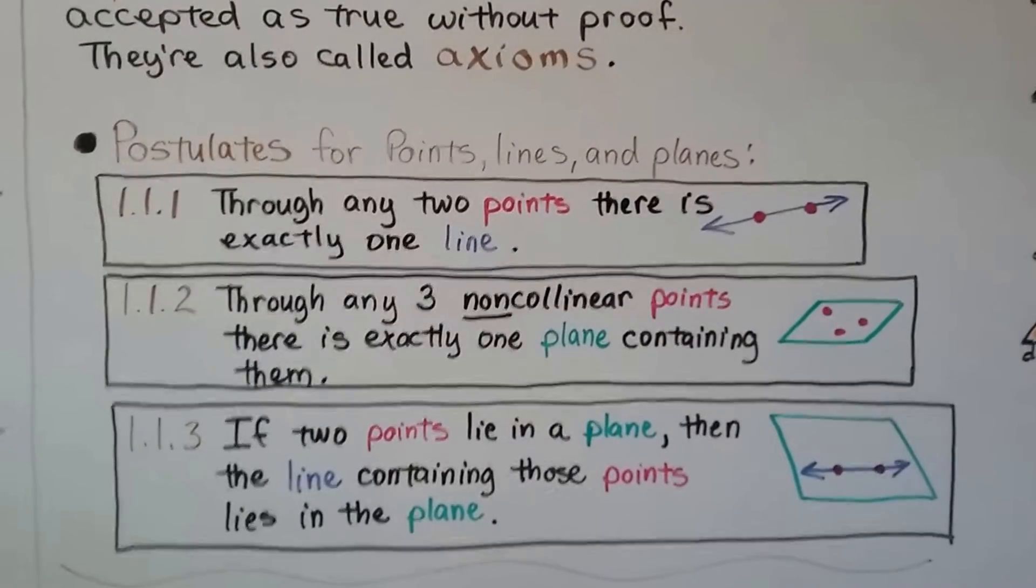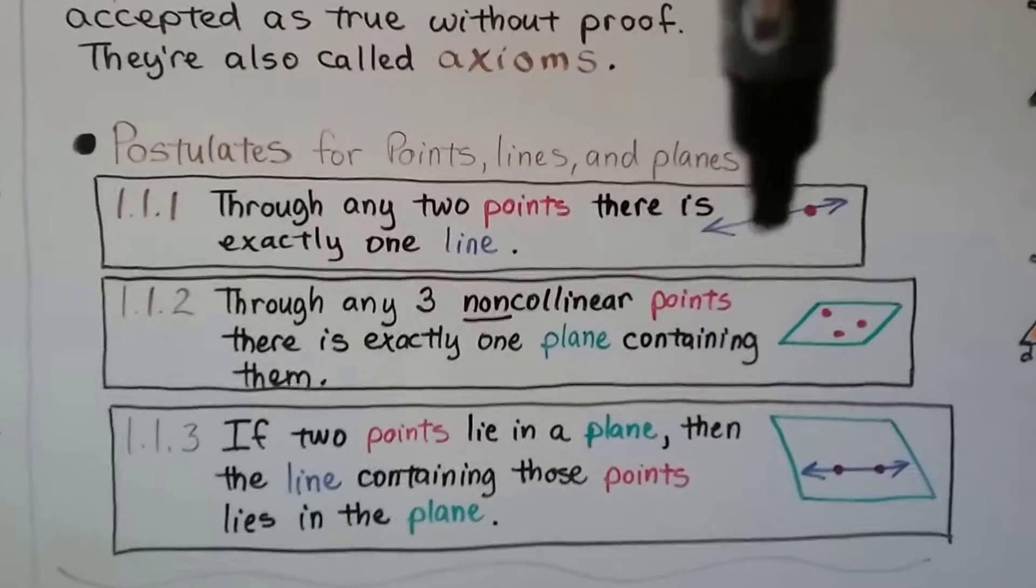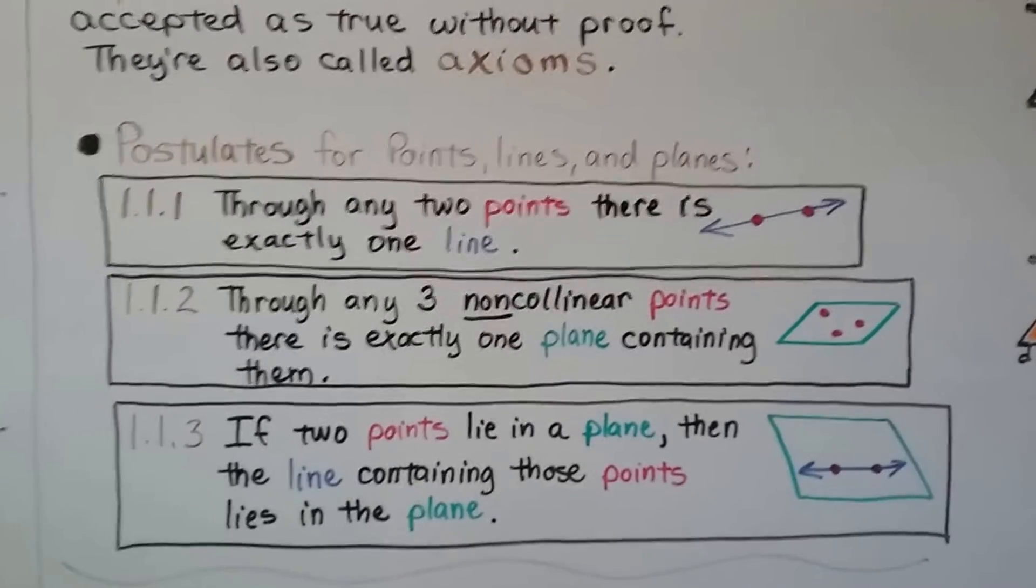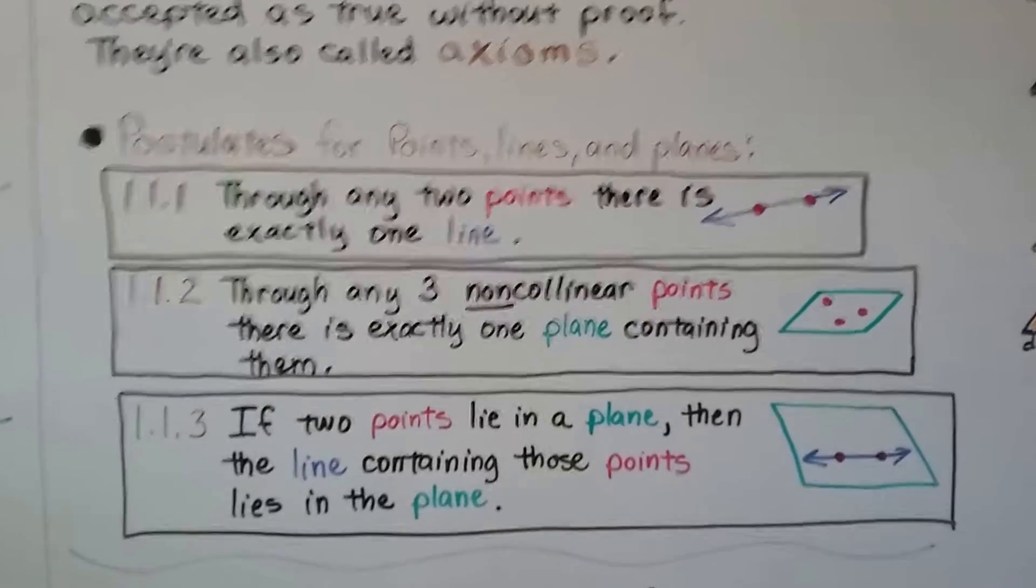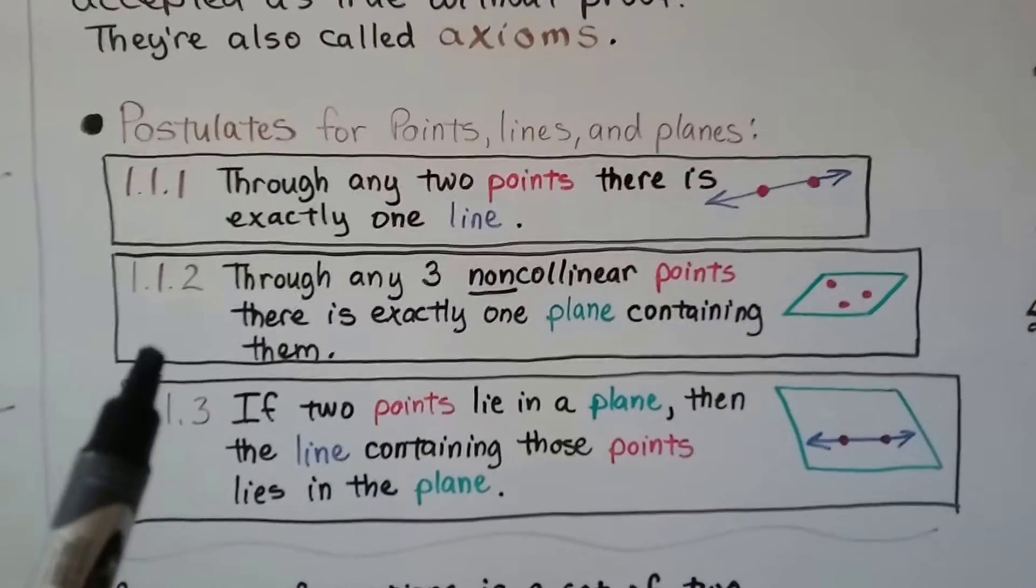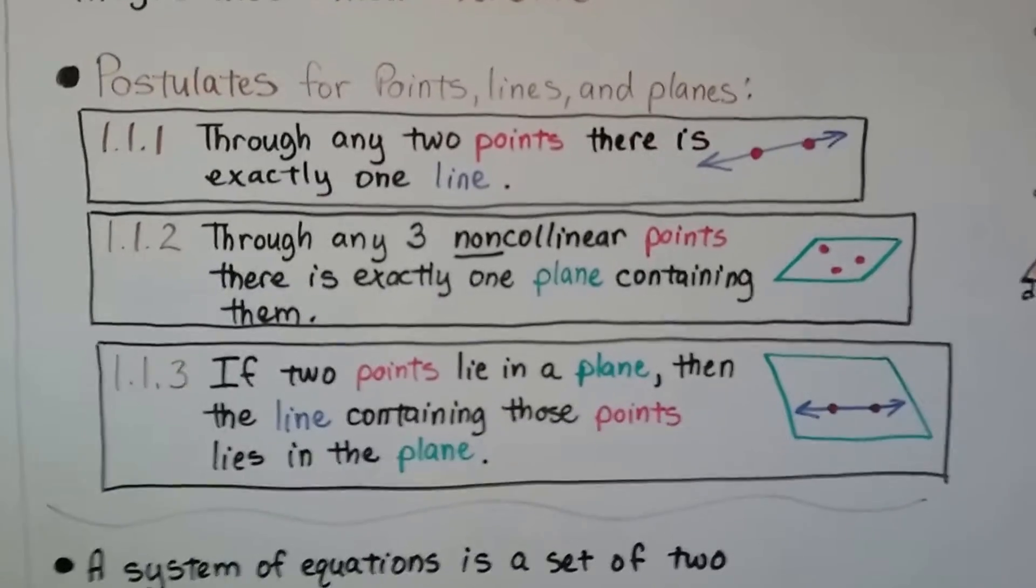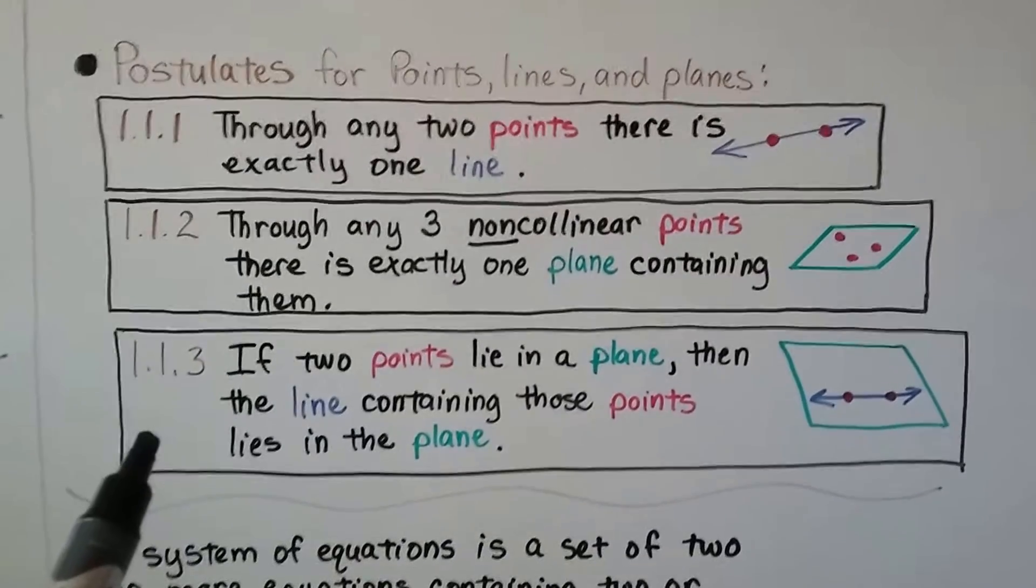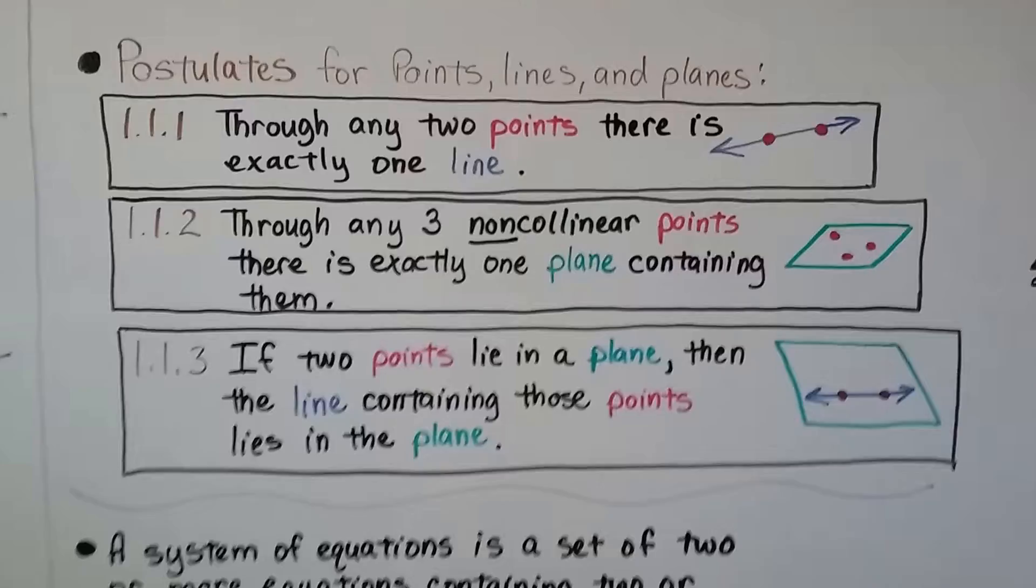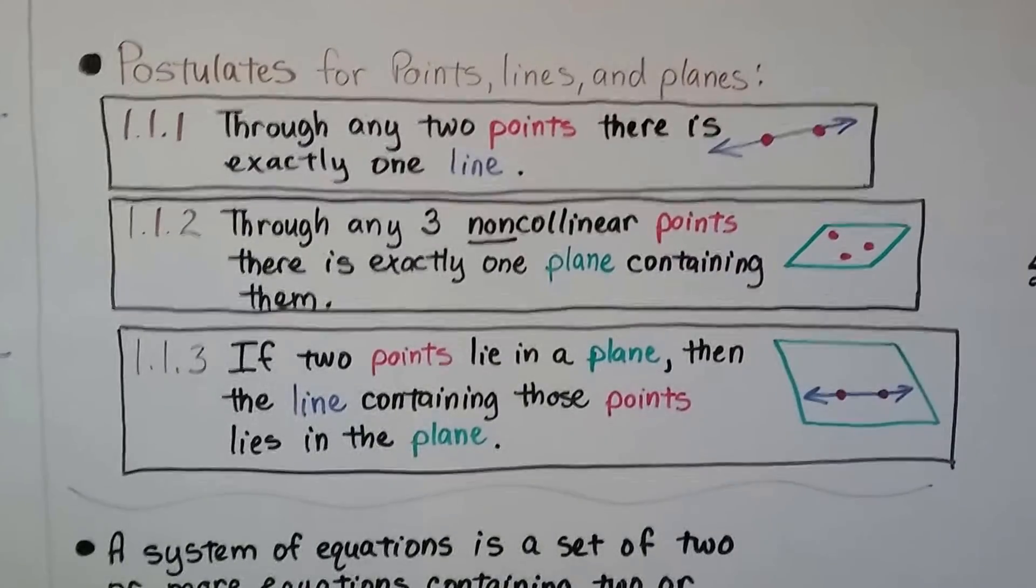The first one says, through any two points, there is exactly one line. Through any two points, there's one line. And the second one says, through any three non-collinear points, there's exactly one plane containing them. And the last one says, if two points lie in a plane, then the line containing those points lies in the plane.